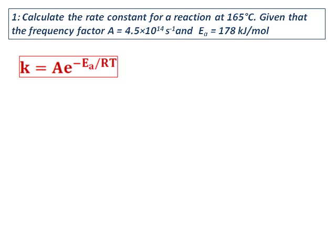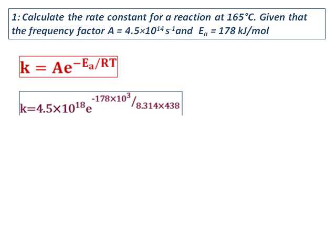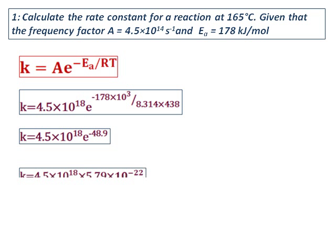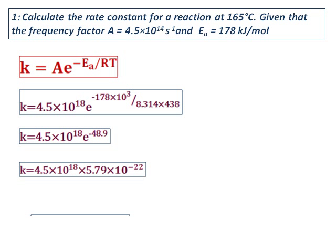A is given, Ea is given, and we know R and T, so we need to find k. Be careful: Ea is given in kilojoules, so convert to joules. Use R as 8.314 J/(K·mol), and convert temperature to Kelvin by adding 273. Substituting into the equation gives k equals 2.6 × 10^-4 s^-1.